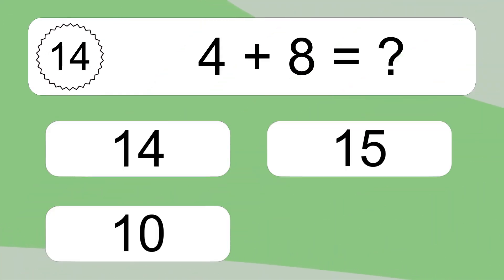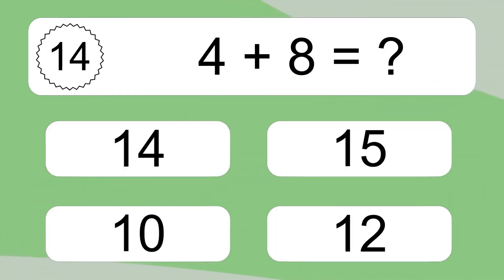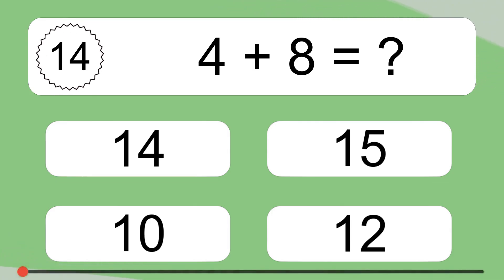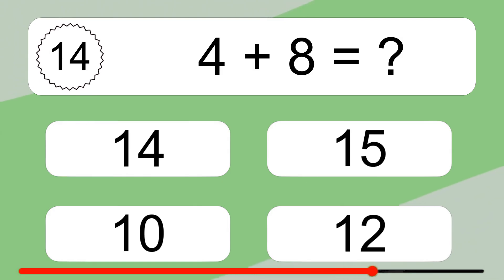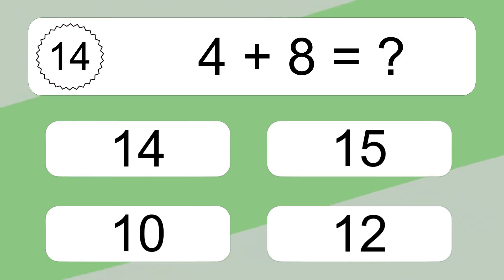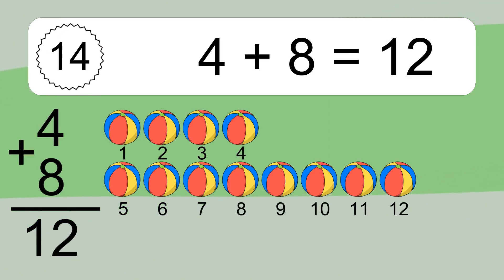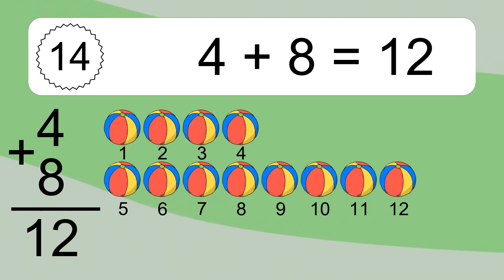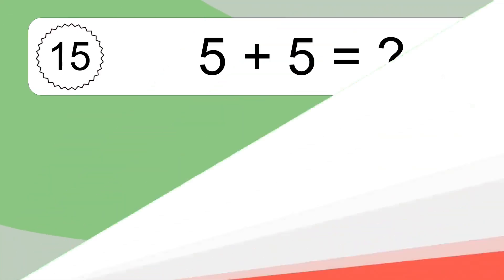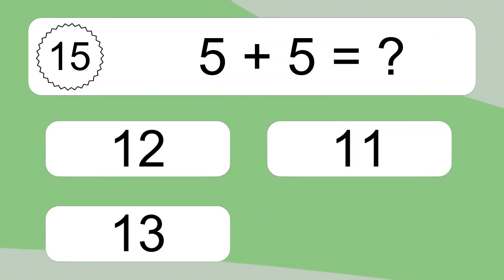4 plus 8 equals what? 4 plus 8 equals 12. Let's count it: 1, 2, 3, 4, 5, 6, 7, 8, 9, 10, 11, 12.